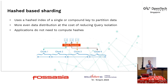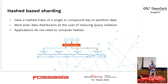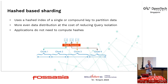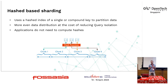With hash-based sharding, the cluster applies a hash function to the chosen shard key — the application doesn't need to compute this. The cluster computes a hash of the shard key, and the data is randomly distributed. This provides better data distribution across shards, but at the expense of poor query isolation when scanning a range of shard keys.